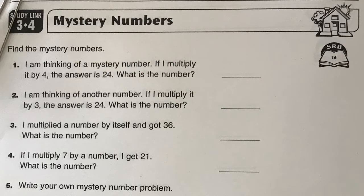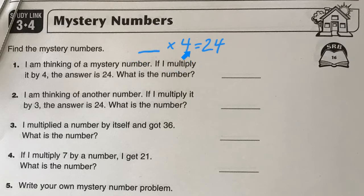So first we have: I am thinking of a mystery number. If I multiply it by 4, the answer is 24. So it's basically saying, if I multiply this number by 4, the answer is 24. Hopefully you know what this number is. You can go backwards with division to figure it out if you don't know — 24 divided by 4 — but the answer here is going to be 6, is the mystery number.